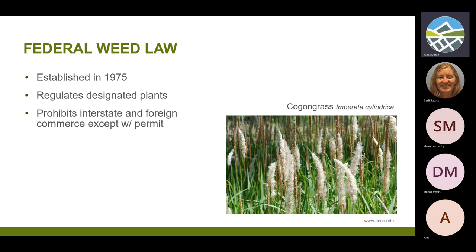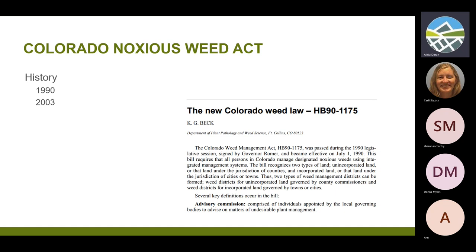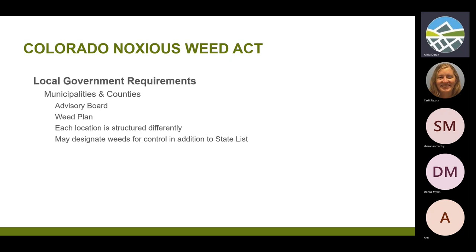The federal weed law was established back in 1975 and regulates plants coming into the United States and some moving around the United States. In Colorado, our Noxious Weed Law went into effect in 1990 and was modified in 2003 to add a prioritized noxious weed list. The bottom line of the law is that it requires local governments — both cities and counties — to have a noxious weed advisory board.